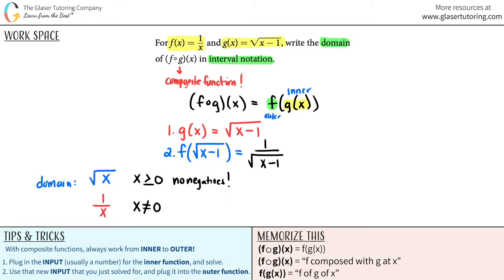So just know your two exclusion values for square roots and denominators. However, for our case, we have a double whammy, we have a square root, and we have a denominator. So we kind of have to use these two ideas together.